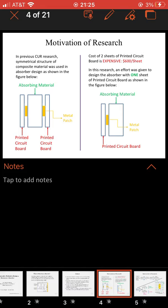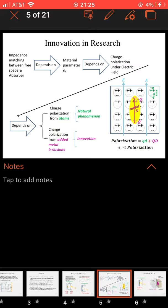Motivation of research: In previous CUR research, symmetric structure of a composite material was used in absorber design as shown in the figure below, using two printed circuit boards in this case. But because the cost of printed circuit boards or PCB is expensive, $600 per sheet, in this research an effort was given to design an absorber with one sheet of printed circuit board as shown in the figure below.